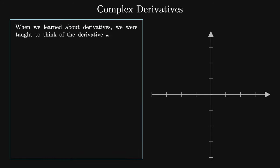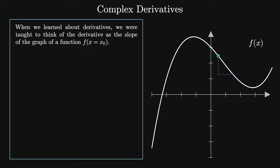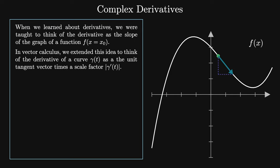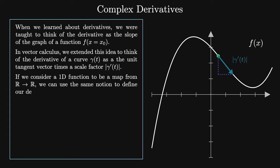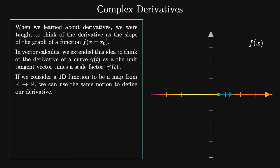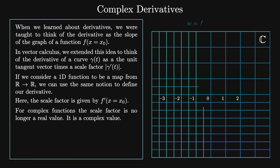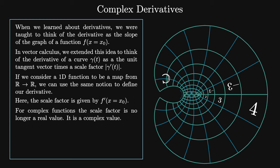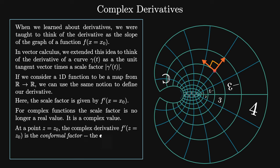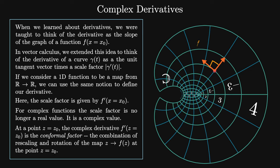When we first learned about derivatives, we thought of them as the slope of a graph at x = x₀. In vector calculus, we extended this to the derivative of a curve gamma as the unit tangent vector times the magnitude of gamma′(t). For complex functions, this scale factor is no longer real — it is a complex value. For some complex map, a frame at z = z₀ gets scaled and rotated, i.e., multiplied by a complex number. We define the complex derivative f′(z₀) to be the conformal factor — the local rotation and rescaling of z₀ under the map z → f(z). Functions that can be complex differentiated are called holomorphic.